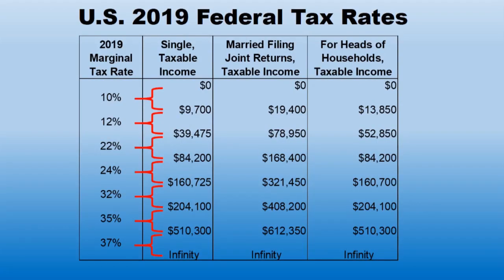When people say they're in this tax bracket or that tax bracket, they're really talking about a marginal tax bracket, because we really pay taxes on the margin in the US. I'll explain that looking at our little chart here. Here we have a chart of the United States 2019 federal tax rates, including rates for the single person, married filing joint returns, and heads of households.